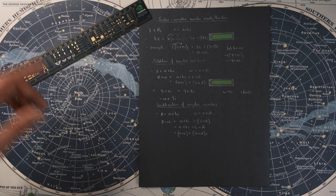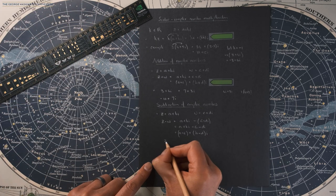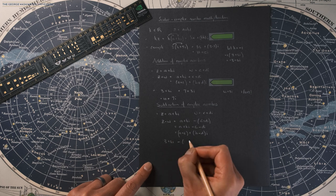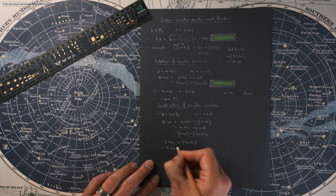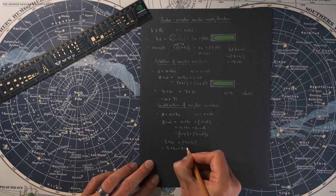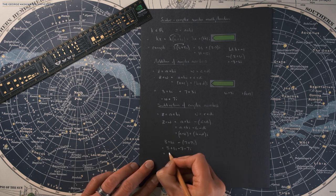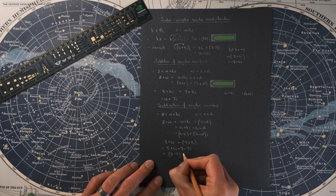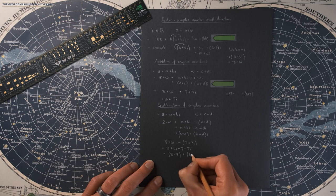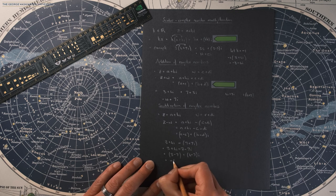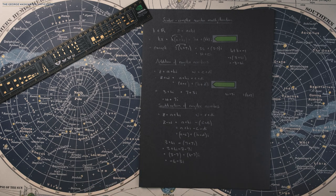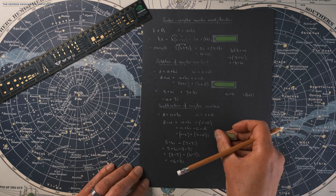Let's say we have (3 + 4i) minus (7 + 7i). We get 3 + 4i minus 7 minus 7i. Grouping together: (3 minus 7) plus (4 minus 7) times i, giving us negative 4 plus negative 3i. As simple as that — that's our definition of the subtraction of complex numbers.